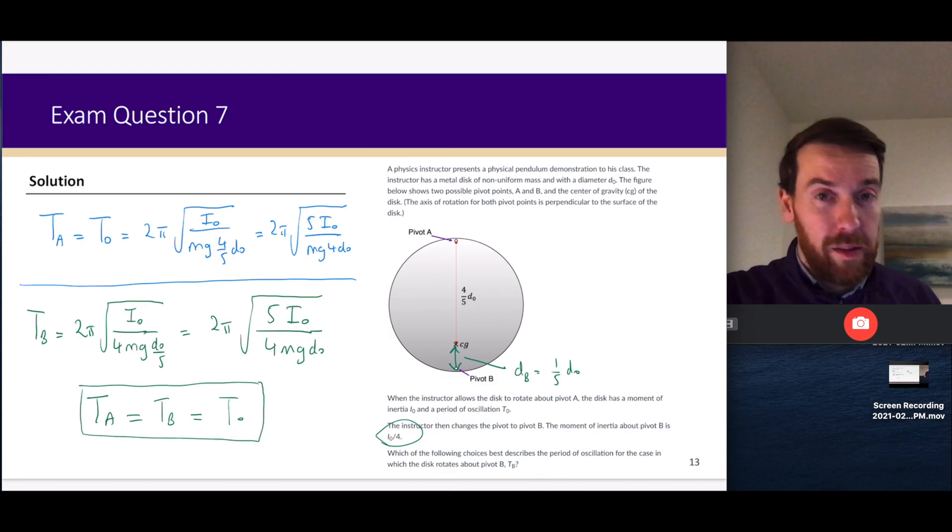It just works out in such a way that the change in the moment of inertia and the change in the distance d give us that same ratio of I over d. They both have the same mass, so everything else will work out. We're just looking at the changing of I₀ and also remembering that we're also changing d when we change it to pivot B. Challenging question on physical pendulums, but I'll wrap the question up there and move on to question eight.